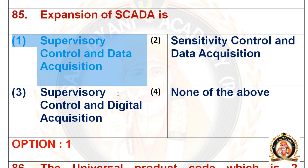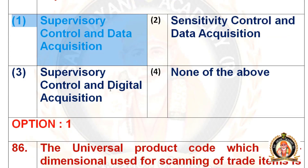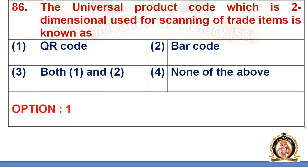For detailed solutions, visit our YouTube channel SaiGen Academy where you get all the solutions. Move on to the 86th question: the universal product code which is two-dimensional and used for scanning of trade items is known as dash. Options: QR code, barcode, both, or none of the above. The right option is QR code.